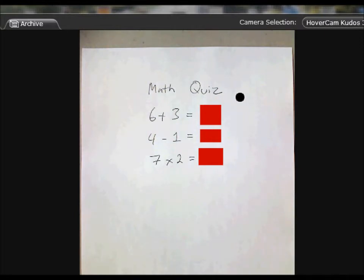So what I have on my screen right now is a math quiz and you can see I blocked out the answers to the math quiz using what's called mask or cover cloth inside of Hovercam Flex.